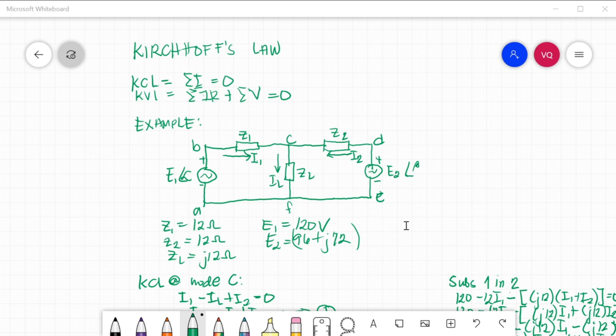For Kirchhoff's Current Law, according to this law, in any electrical network, the phasor sum of the currents meeting at a junction is zero. In other words, the summation of currents at any junction is equal to zero. Put it in another way, it simply means that in any electrical circuit, the phasor sum of the currents flowing towards the junction is equal to the phasor sum of the currents going away from the junction.